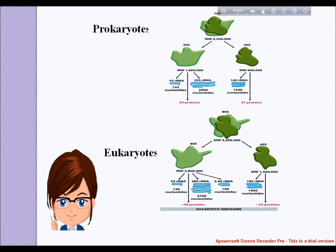The large subunit contains three rRNA species: 5S, 5.8S, and 28S — or 25S in plants. Mammalian cells have two mitochondrial rRNAs (12S and 16S) and four types of cytoplasmic rRNAs: the 28S, 5.8S, 18S, and 5S.